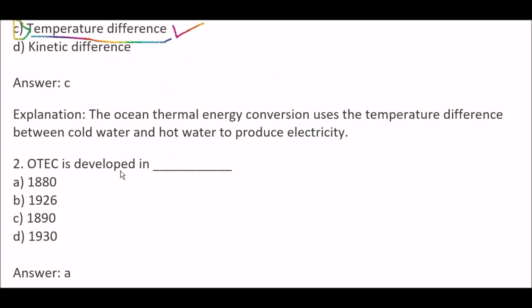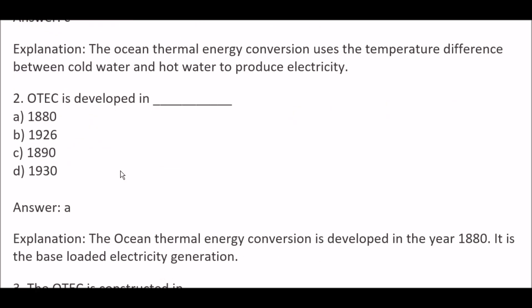Next question: OTEC is developed in — Option A, 1880; Option B, 1926; Option C, 1890; Option D, 1930. Right answer is Option A, 1880. Because the ocean thermal energy conversion was developed in the year 1880. It is the base-loaded electricity generation.